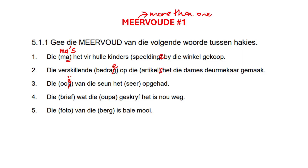Oor. This word ends on an r, so you would think we're just going to add an s — but no. Remember, here we have two vokale (vowels). So you can't only look at the last letter; you have to look at the word as a whole. This is what we call a tweeling vokale. So one of the vokale is going to fall away and we're going to add an e. So it will be ore.